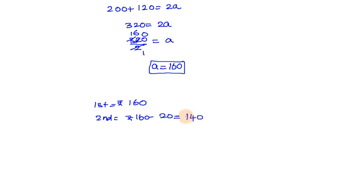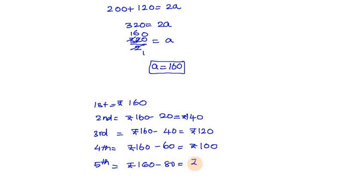Second prize: ₹160 - 20 = ₹140. Third prize: ₹160 - 40 = ₹120. Fourth prize: ₹160 - 60 = ₹100. Fifth prize: ₹160 - 80 = ₹80. Sixth prize: ₹160 - 100 = ₹60. Seventh prize: ₹160 - 120 = ₹40.